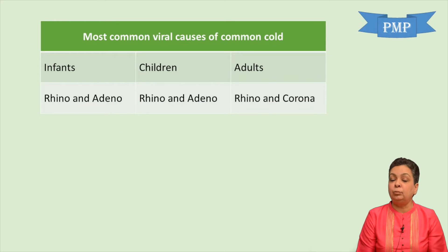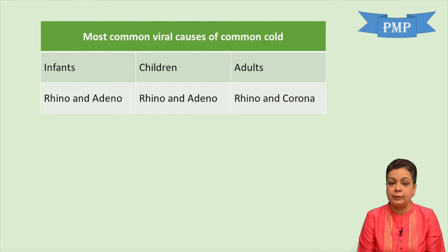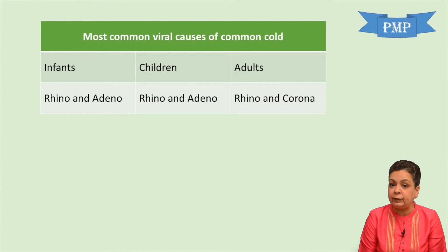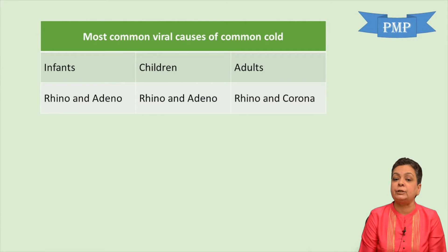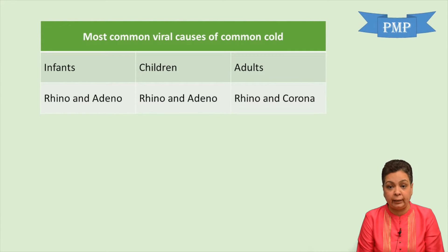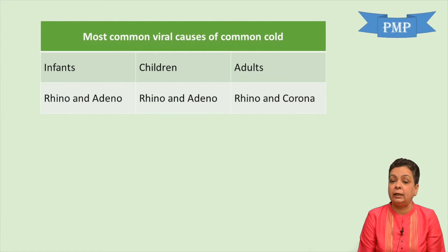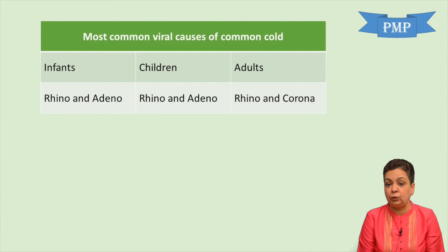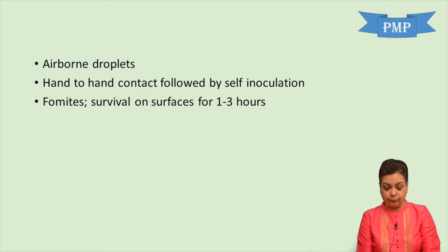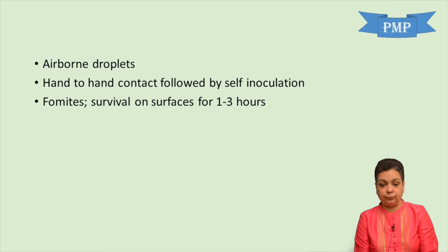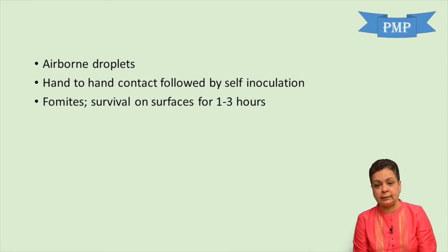Regarding the most common causes of common cold in different age groups: in infants it is rhinoviruses followed by adenovirus; in children it is rhinoviruses followed by adenovirus again; and in adults it is rhinoviruses followed by coronaviruses.